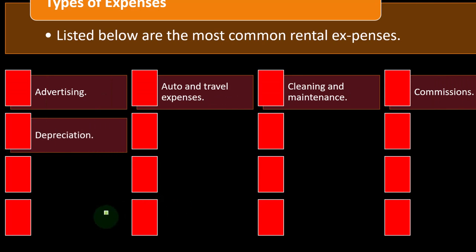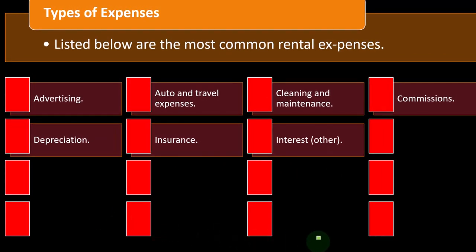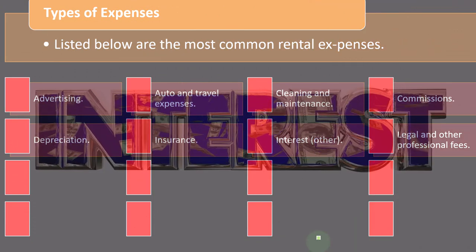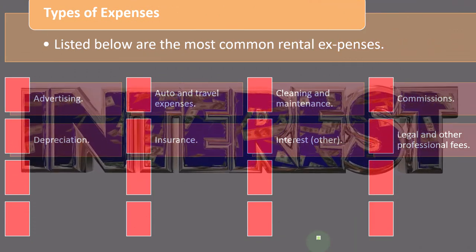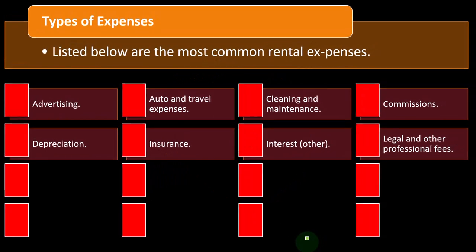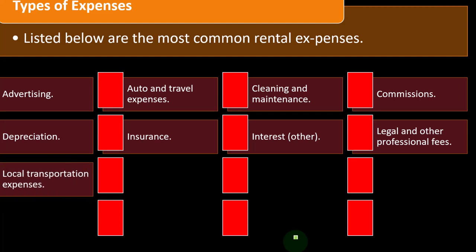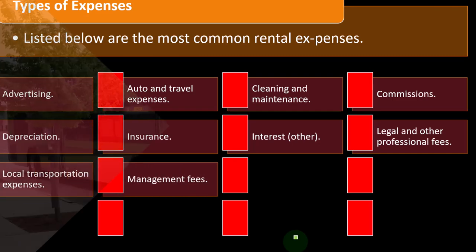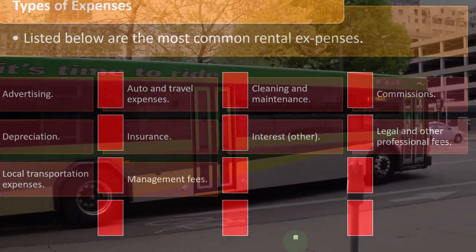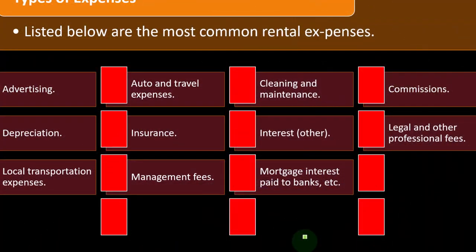The use of the auto, like a normal business, would be an ordinary and necessary expense. Cleaning and maintenance could clearly be a component. Commissions, depreciation—that's a big one, because the rental property itself is a huge cost and depreciating that cost becomes important. Insurance is a common business expense. Interest—obviously there could be a loan, and that loan was necessary for financing to get the capital for the rental property, so the interest on that loan would be business-related. Legal and other professional fees, local transportation expenses, and management fees are also common.